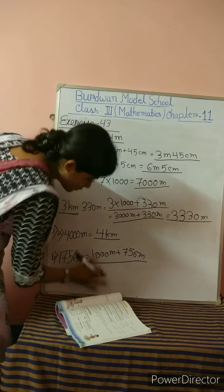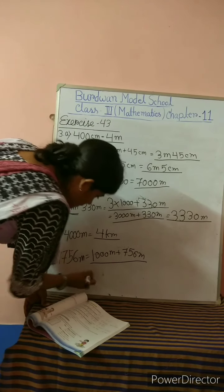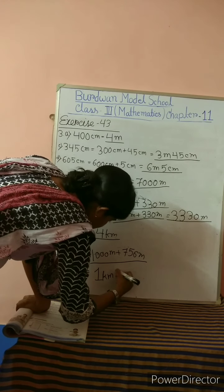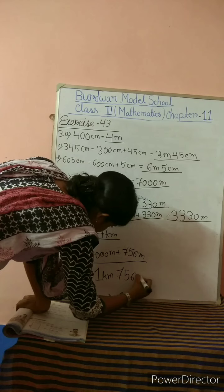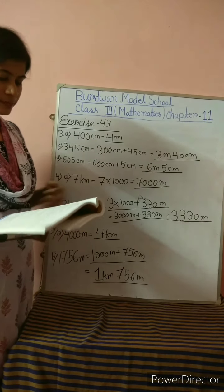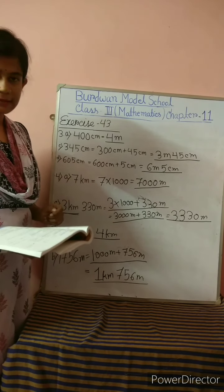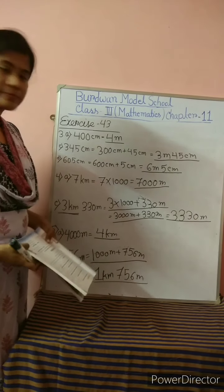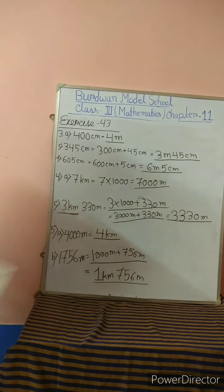Number 5: Convert the following into kilometers and meters. So 4000 meters will be 4 kilometers. Now number B: 1756 meters — convert to kilometers and meters. The relation is 1 kilometer equals 1000 meters. We can write 1756 meters as 1000 meters plus 756 meters.